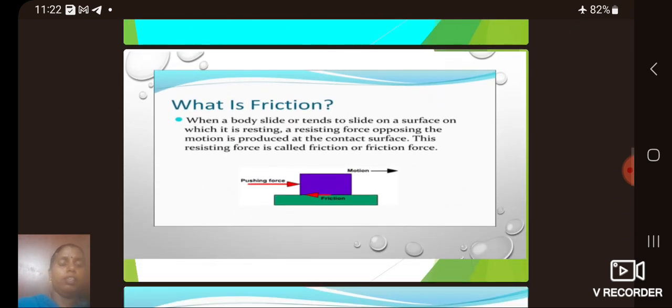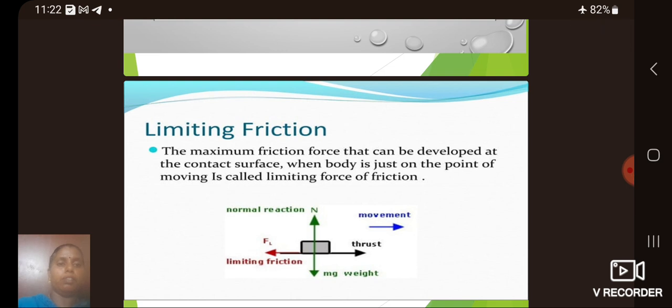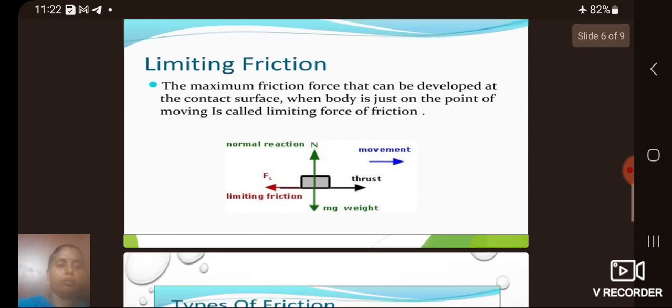Then let we define the friction. When a body slides or tends to slide on a surface which is at rest, a resisting force opposing the motion is produced at the contact surface. This resisting force is called the friction or frictional force. Then limiting friction is defined as the maximum friction force that can be developed at the contact surface when body is just on the point of moving is called the limiting force of friction.